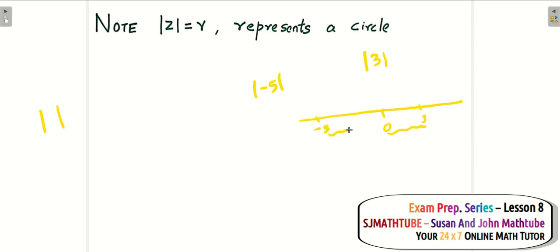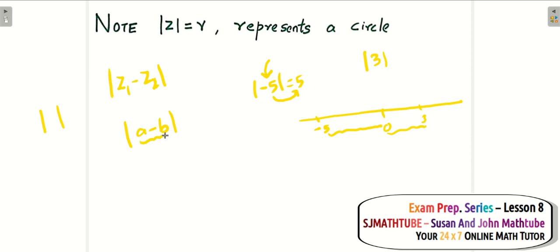The modulus of -5 means the distance of -5 from the origin, which is 5. That is why we use modulus to generate positive numbers, because distance is always positive. Now, modulus of (z₁ - z₂), or |a - b| in real numbers, represents the distance between a and b. For example, |3 - 7| is the distance between 3 and 7, which is 4 units. Basically, modulus is a distance function.